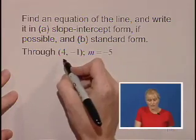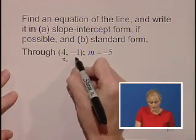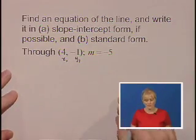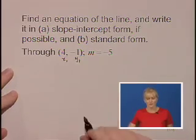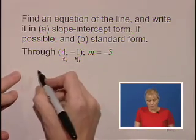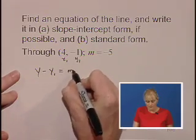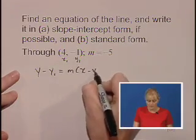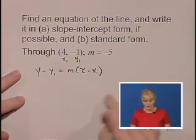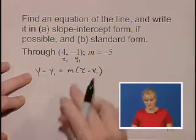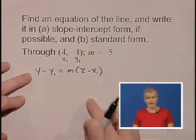We're going to first start and label this point as x1, y1, and we've got our slope at -5, so we're going to use the point-slope form: y minus y1 equals m times x minus x1, making sure we substitute into the correct position the values from our ordered pair and our slope.